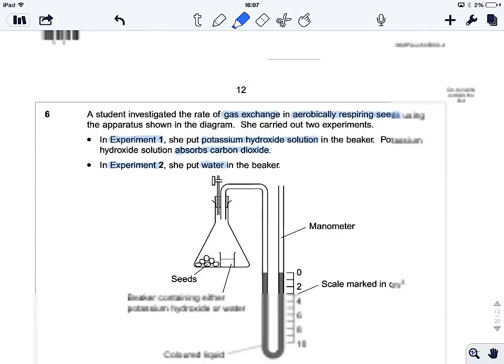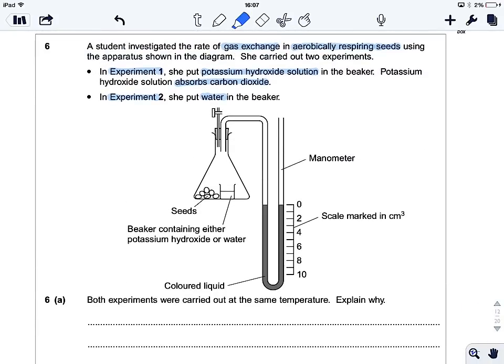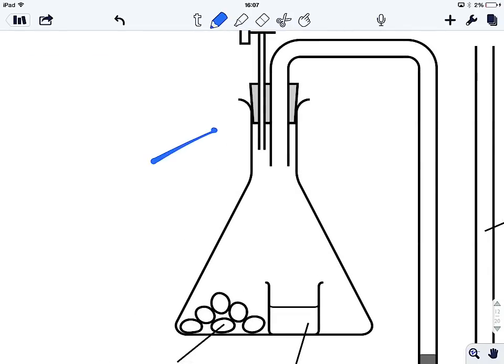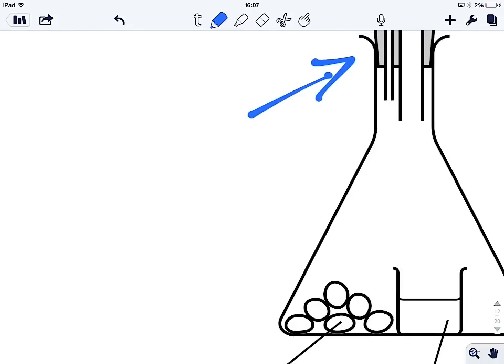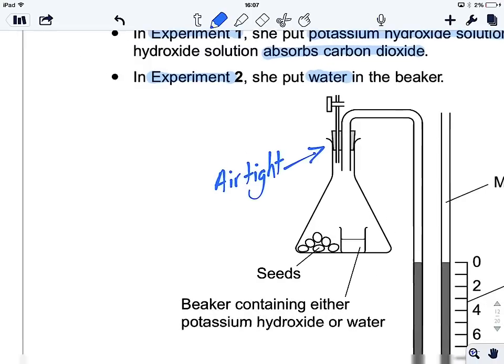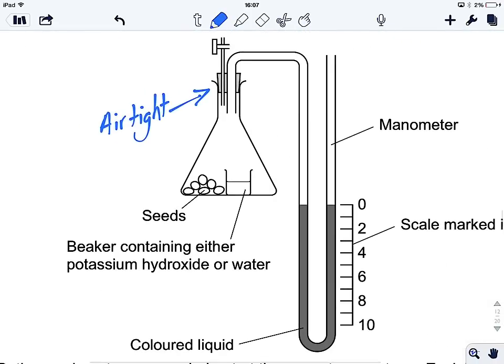There we go. So here's our apparatus. We've got some seeds in a flask. We probably should make an assumption that this bung here is making things airtight. So let's write that on. Airtight. We've got seeds, and we've got the little beaker inside.